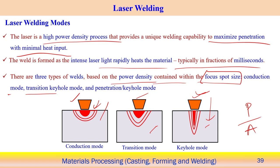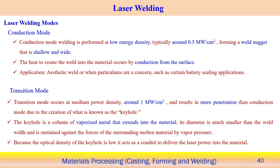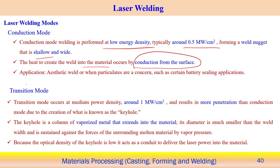Conduction mode characteristics: low power density around 0.5 MW/cm². The weld nugget formed is shallow and wide. Heat is transferred into the material by conduction — there is no keyhole and no vaporization front develops. Application includes aesthetic welds and battery sealing applications where laser power density is deliberately limited.